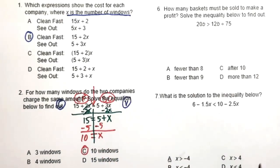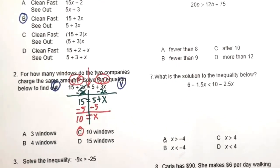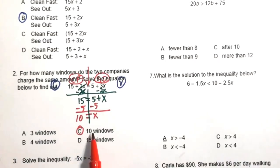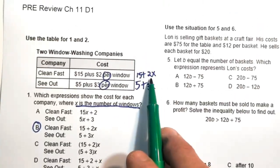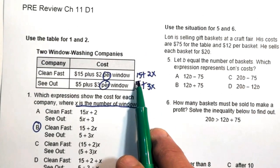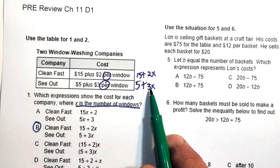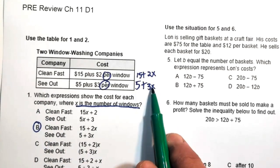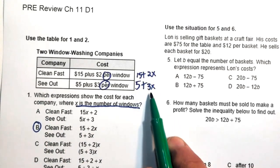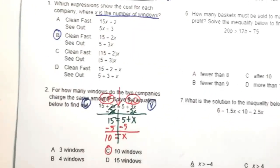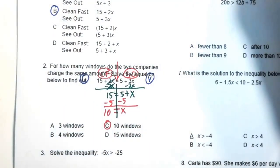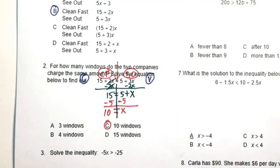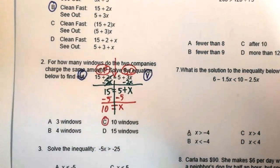That means at 10 windows, the two companies have the same cost. We can verify: 2 times 10 is 20 plus 15 equals $35; for C-Out, 3 times 10 is 30 plus 5 equals $35. So $35 is the cost at 10 windows, but the question only asked for the number of windows. Moving on to number three.